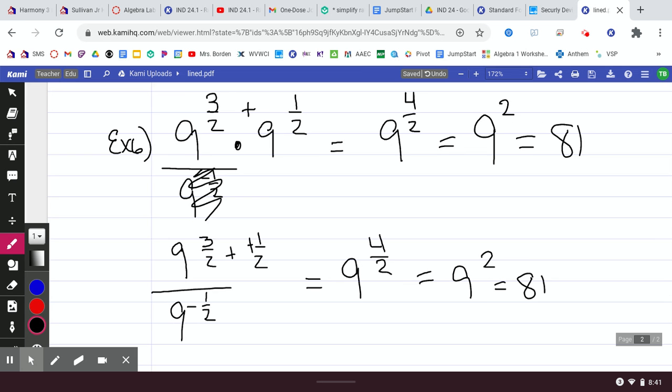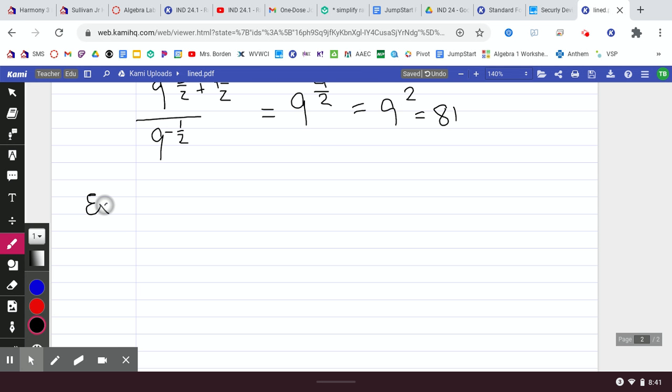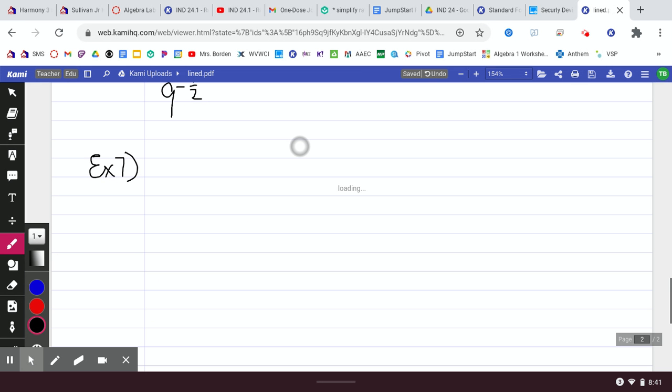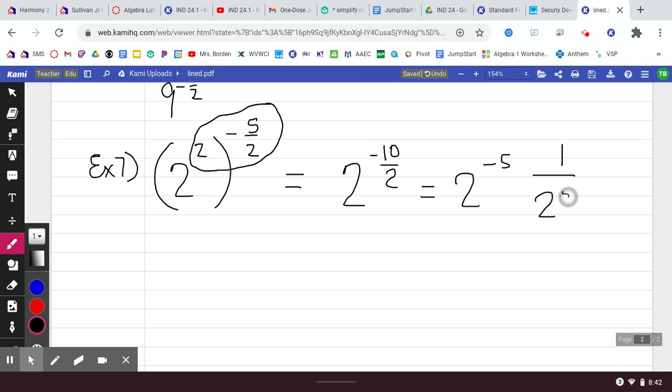The only other thing you might see, if you have 2 to the second power to a negative 5 over 2. If you have this, you're going to want to do your power to a power. There's nothing really inside the parentheses, but power to a power. So you have your base of 2. Negative 5 times 2 is negative 10 over 2. That reduces to negative 5. You flip it to the bottom because of the negative exponent. And then 2 to the fifth power is 1 over 32.